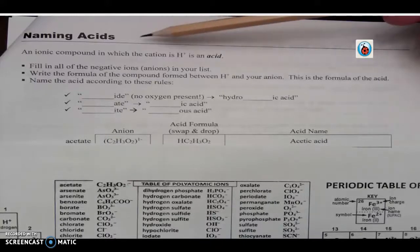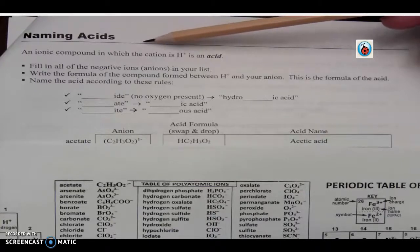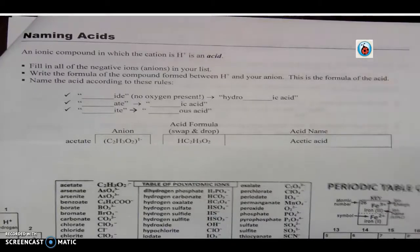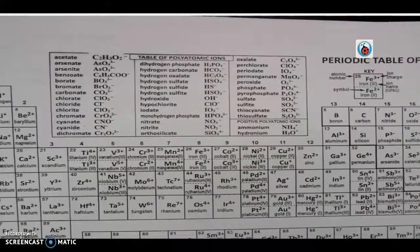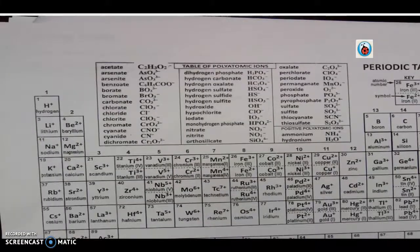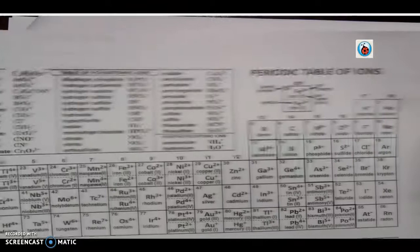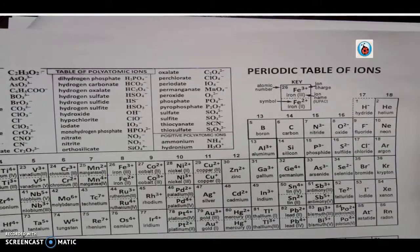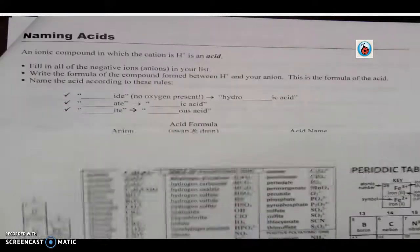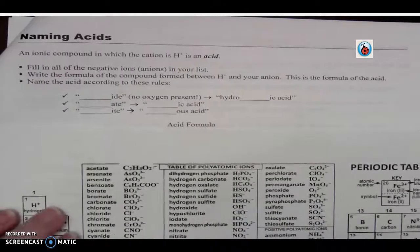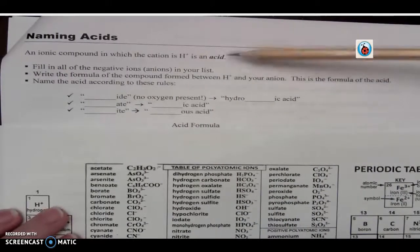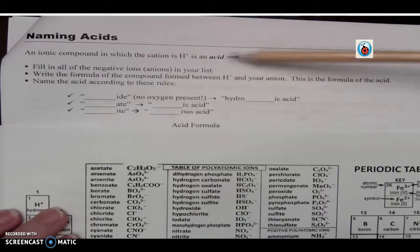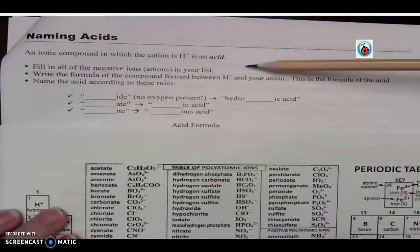We're going to learn how to name acids. You know how to name bases and salts because it's just regular naming on your ion chart - you look up the positive ion, look up the negative ion, and stick the names together. Those are easy. Acids, though, are a little more difficult. An acid is an ionic compound in which the cation or the positive ion is hydrogen.